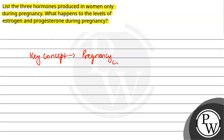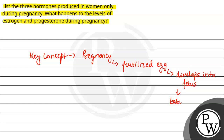Pregnancy हमारी body में एक ऐसा change होता है जब fertilized egg बनता है - जब egg and sperm fuse कर जाते हैं and ये बनाते हैं हमारा fertilized egg, जो की further develop करता है into fetus. ये fetus जो होता है, ये up to 40 weeks तक body में रहता है, uterus में implanted रहता है, and इसके बाद baby deliver हो जाता है.